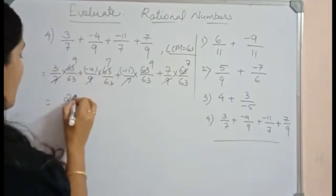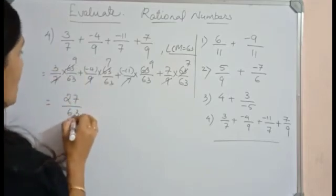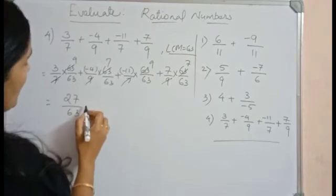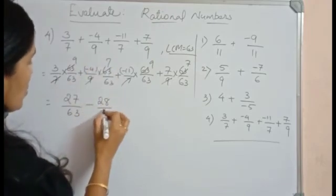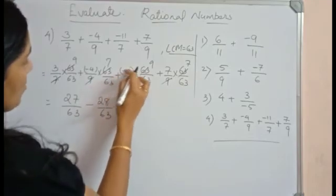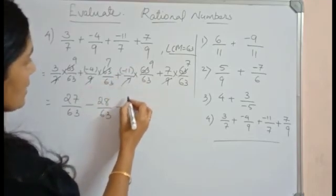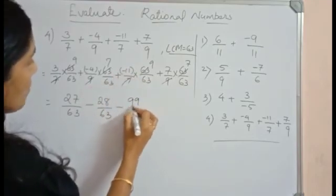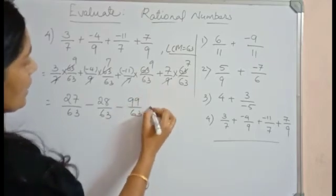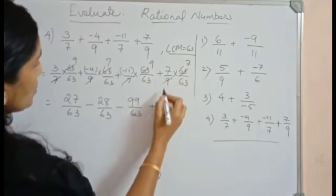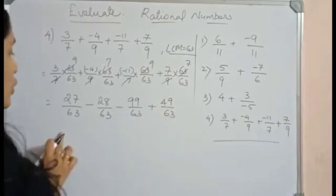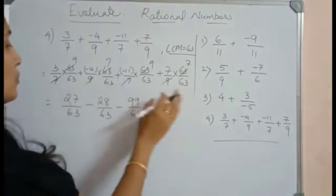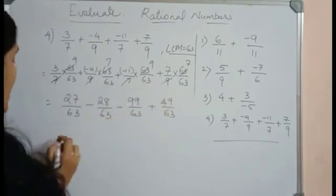3 9's are 27/63. Then plus into minus is minus 4 7's are 28/63. Again plus into minus is minus 99/63. Then plus 7 into 7, 49/63. So all the denominators are same. Just we have to add or subtract the numerators.